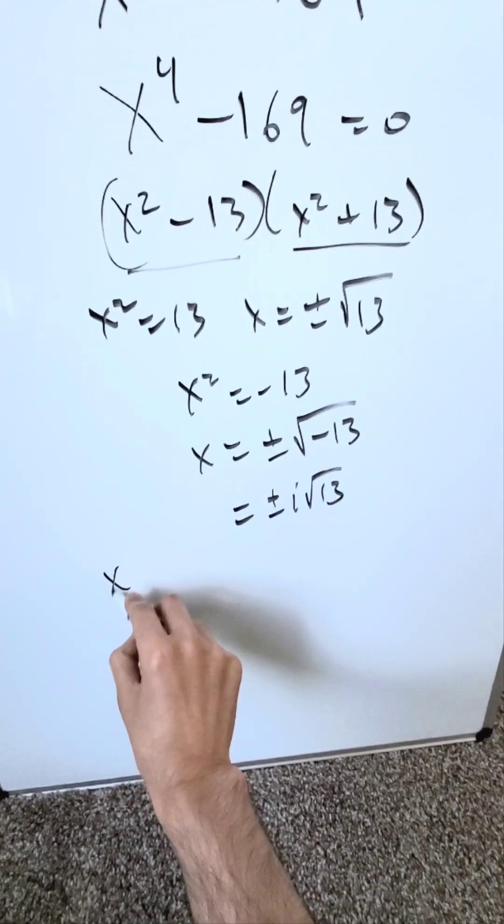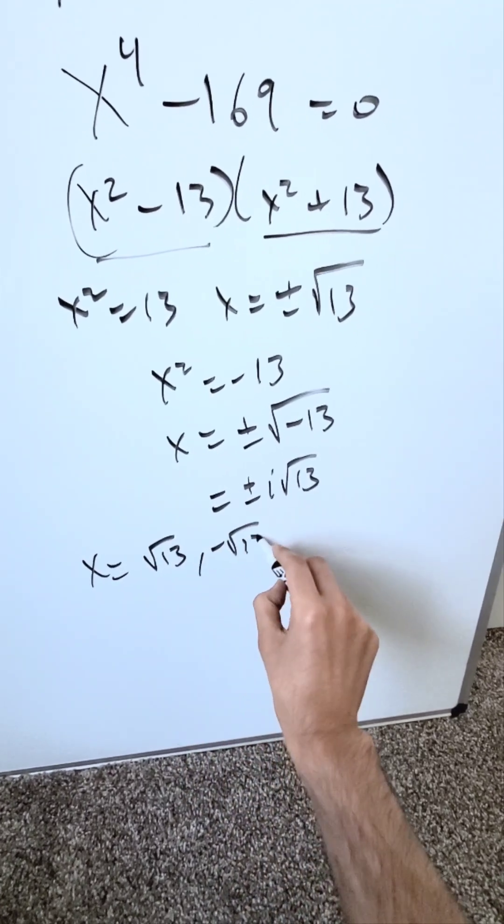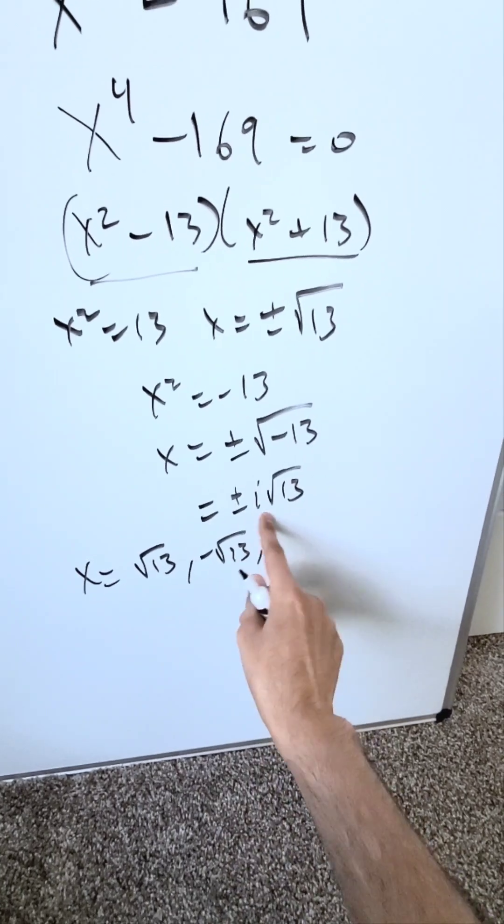I'm seeing four solutions. x here can be equal to a positive root 13 and negative root 13. These are your real solutions right here. I have two imaginary solutions.